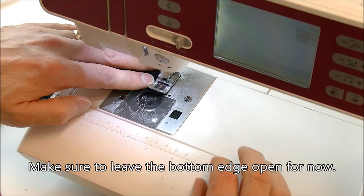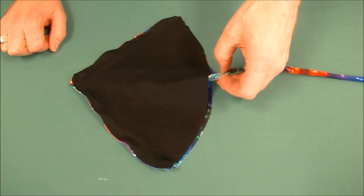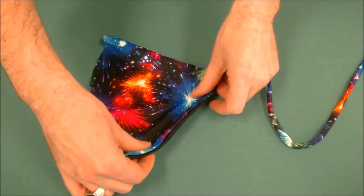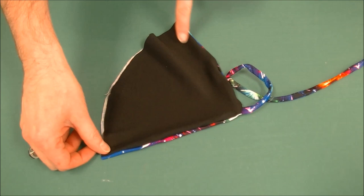Once we've sewn this top edge, we're going to turn it and you can actually just use your strap to help turn it through. Maybe give it a bit of a tug to create more of that triangle shape. Now you'll notice that this doesn't want to lay flat, so we're going to top stitch with a zigzag stitch along that edge. The zigzag will help it stretch after it's made.